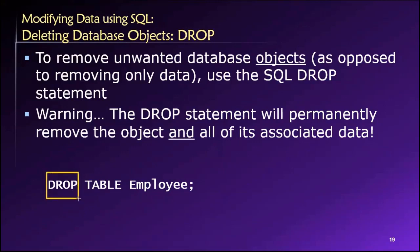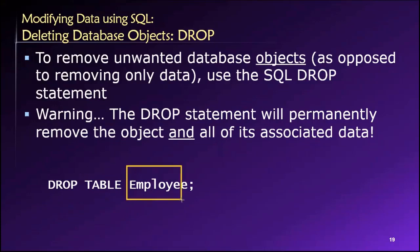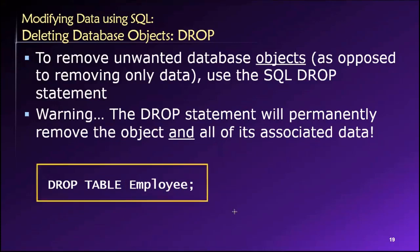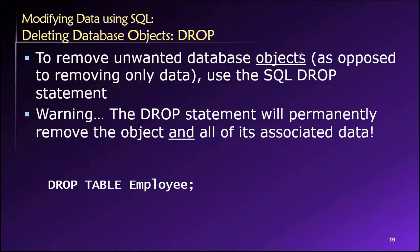The syntax pattern is quite straightforward. The drop keyword is first, then the type of database object we want to drop — in this case, a table — and then the name of that object. So DROP TABLE employee means all of the data in the employee table, along with the table itself, will be removed from the database.